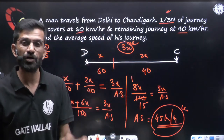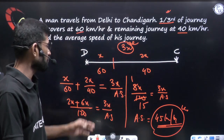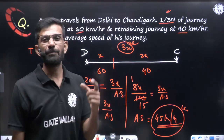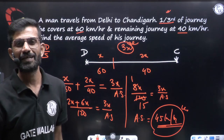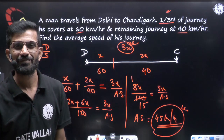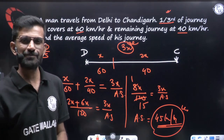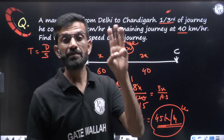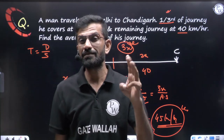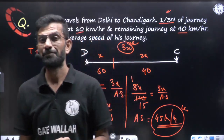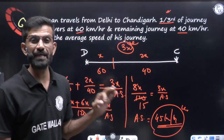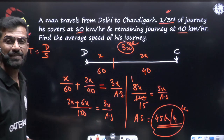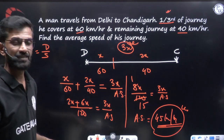The average speed here is 45 km/hr. Do not add 60 and 40 and divide by 2, and do not use the shortcut 2xy/(x+y) here — the answer is 45 km/hr. Average speed has been asked thrice in the GATE exam, so this concept is very important.